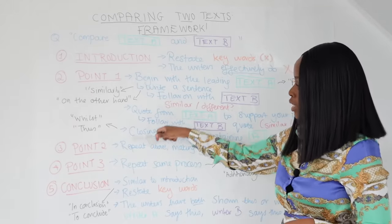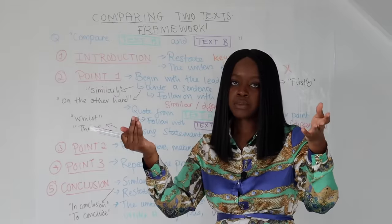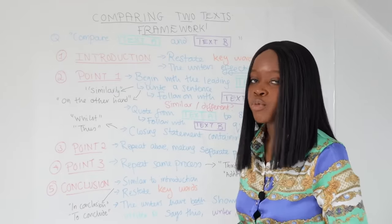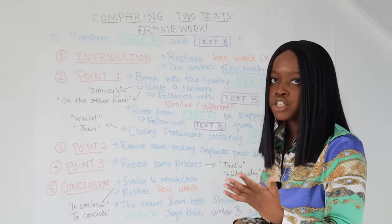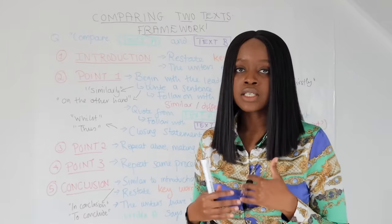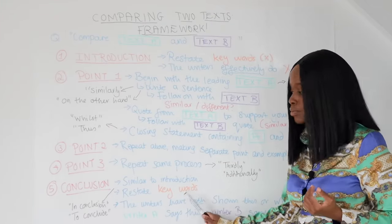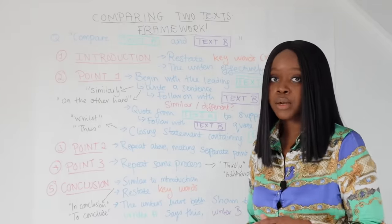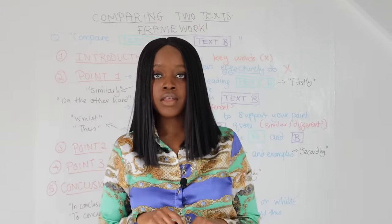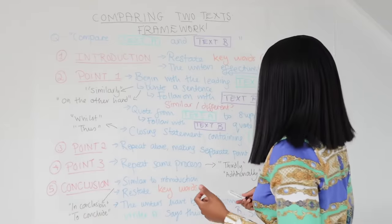For point two, use 'secondly'; for point three, use 'thirdly'; for a fourth point, use 'fourthly' or 'finally.' After all your points, finish with a conclusion. A conclusion should not be lengthy — it's very similar to your introduction: broadly close the discussion. Restate the keywords from the question, then state that the writers have both shown this with similar points, or that whilst on the one hand this is the case, on the other hand this other case applies — particularly if your essay is highlighting how the texts are very different.